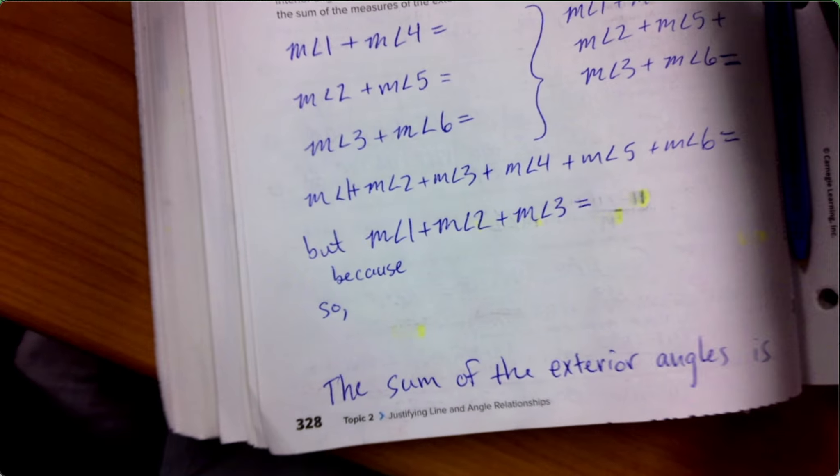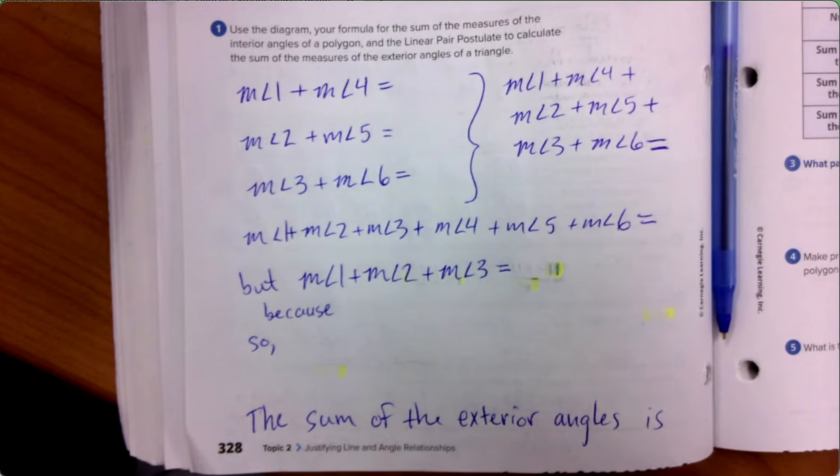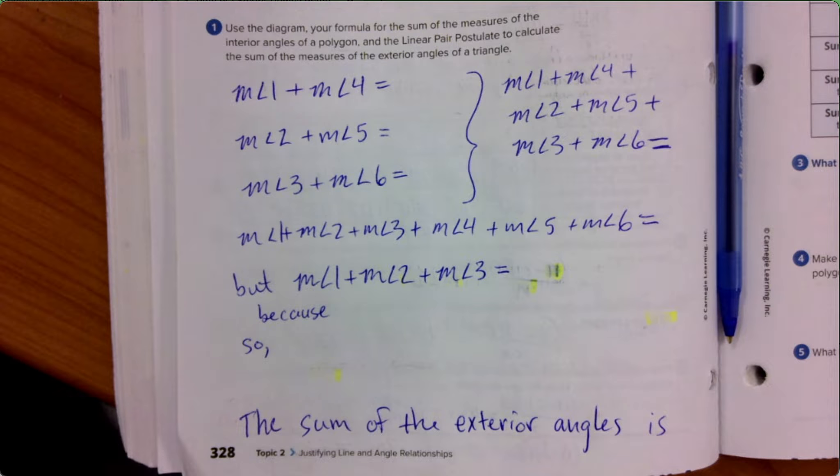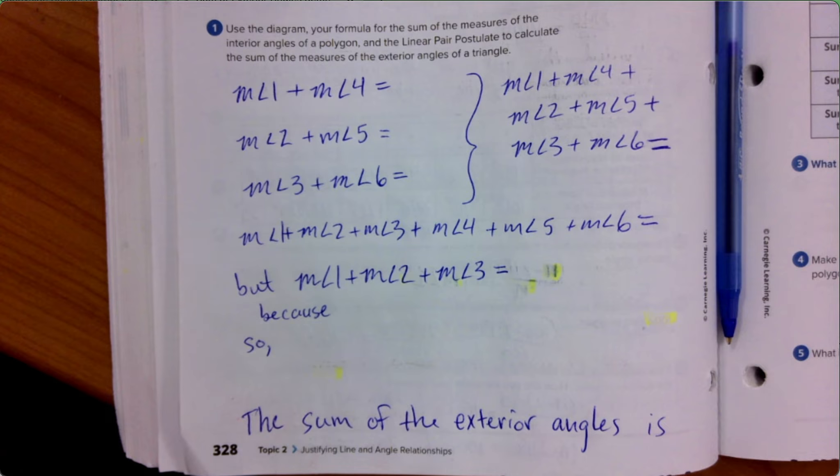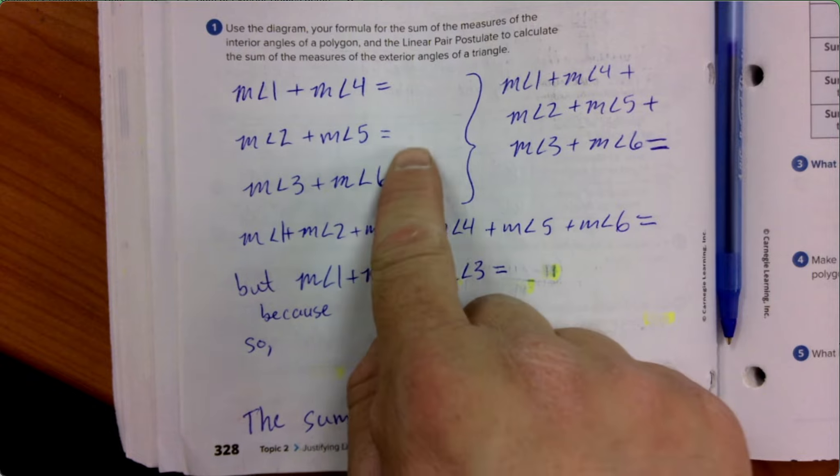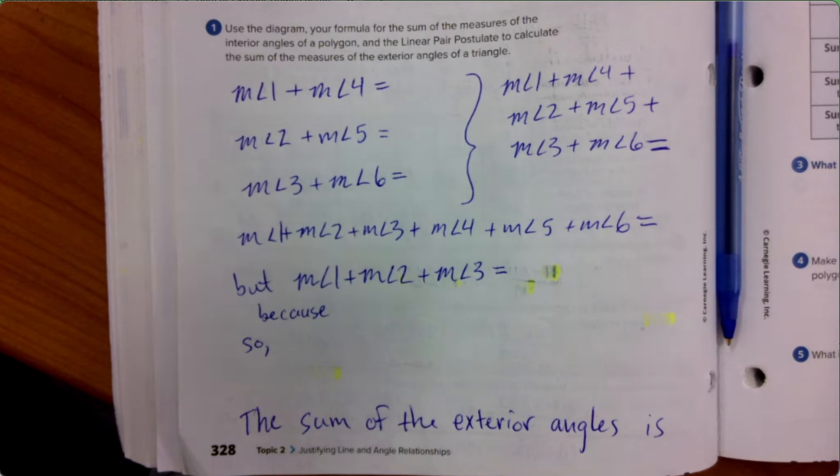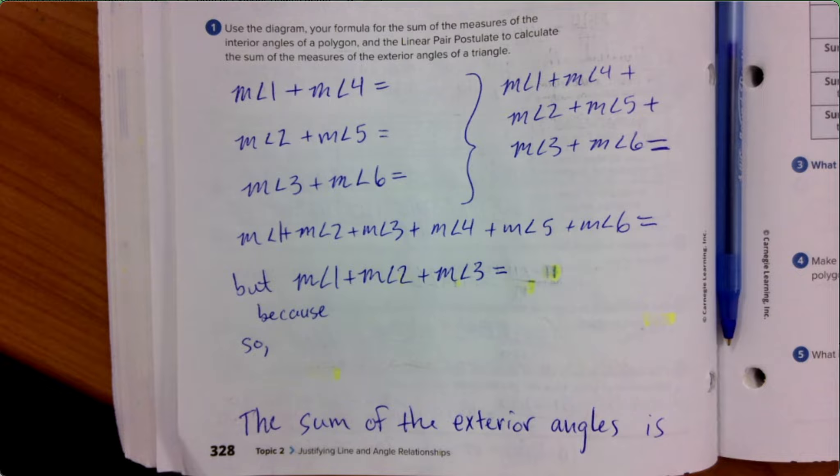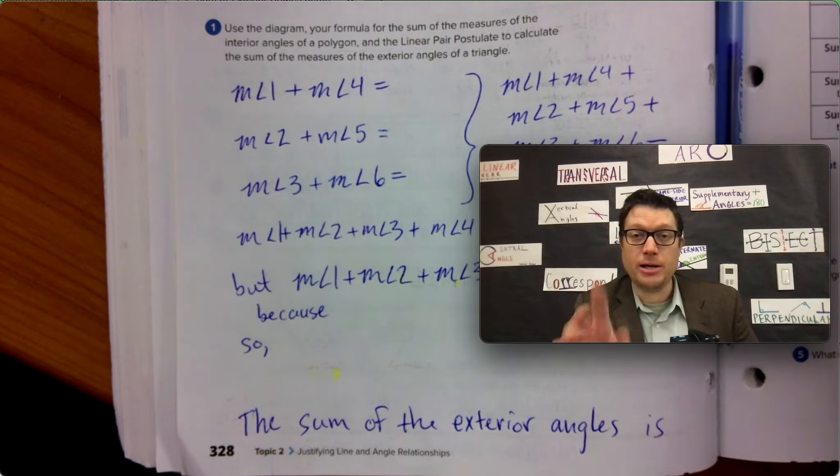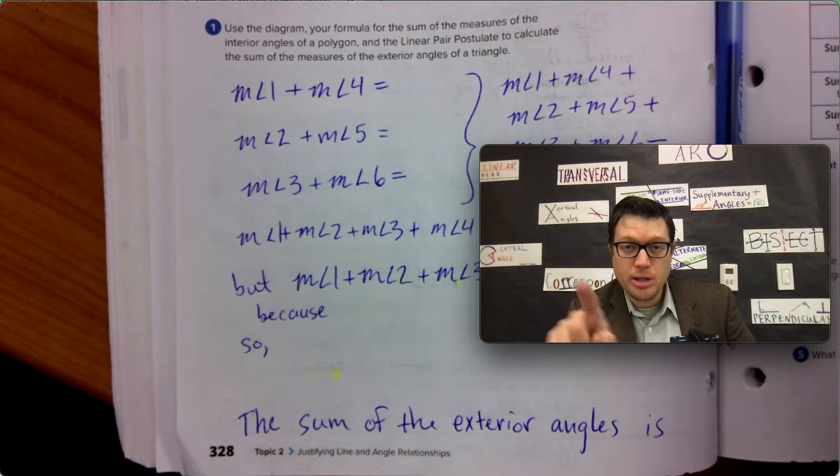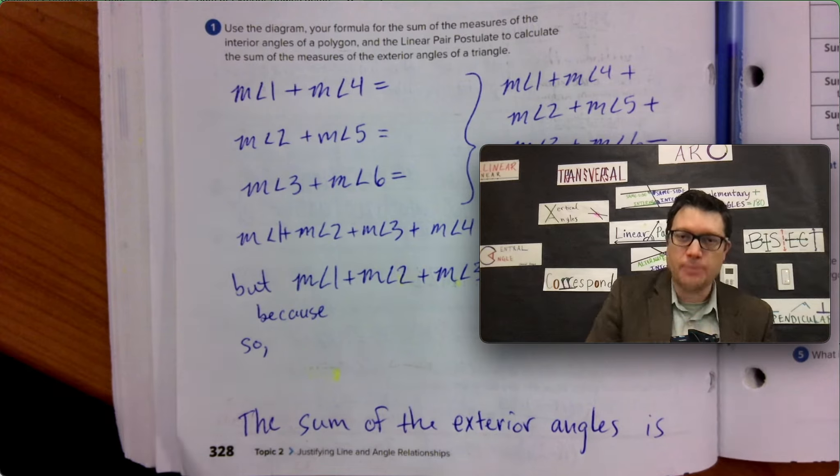Maybe you should pause the video in this moment and copy paste and then I'm going to fill in the blanks with you. Here we go. So right about there, measure of angle one plus measure of angle four equals, we're going to fill in that blank. Measure of angle two plus measure of angle five equals, we're going to fill in that blank. And so let me pause for a minute. Did you write down everything on that page? If not, pause and go back and do it again.